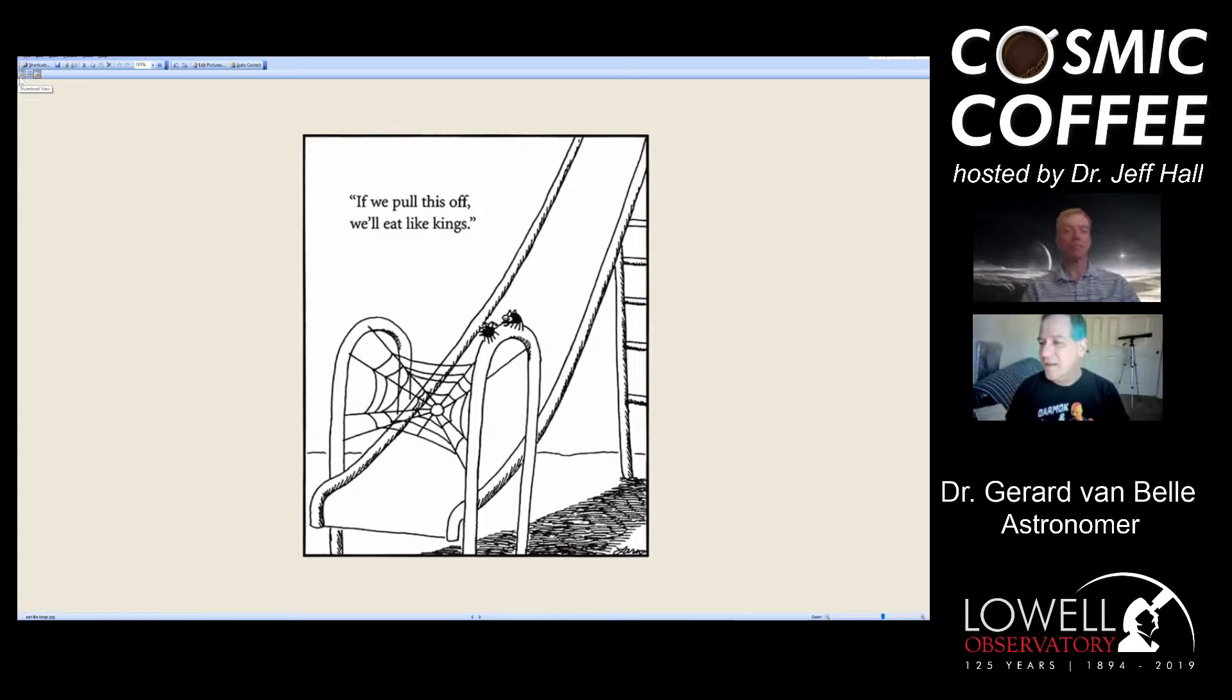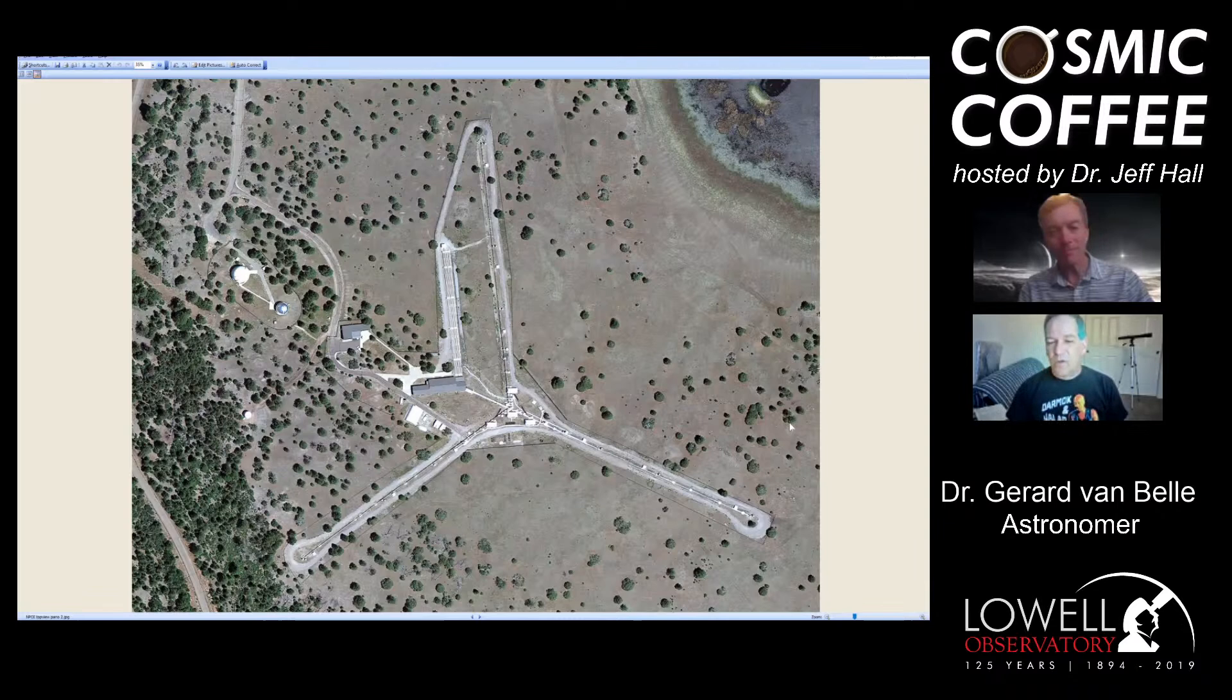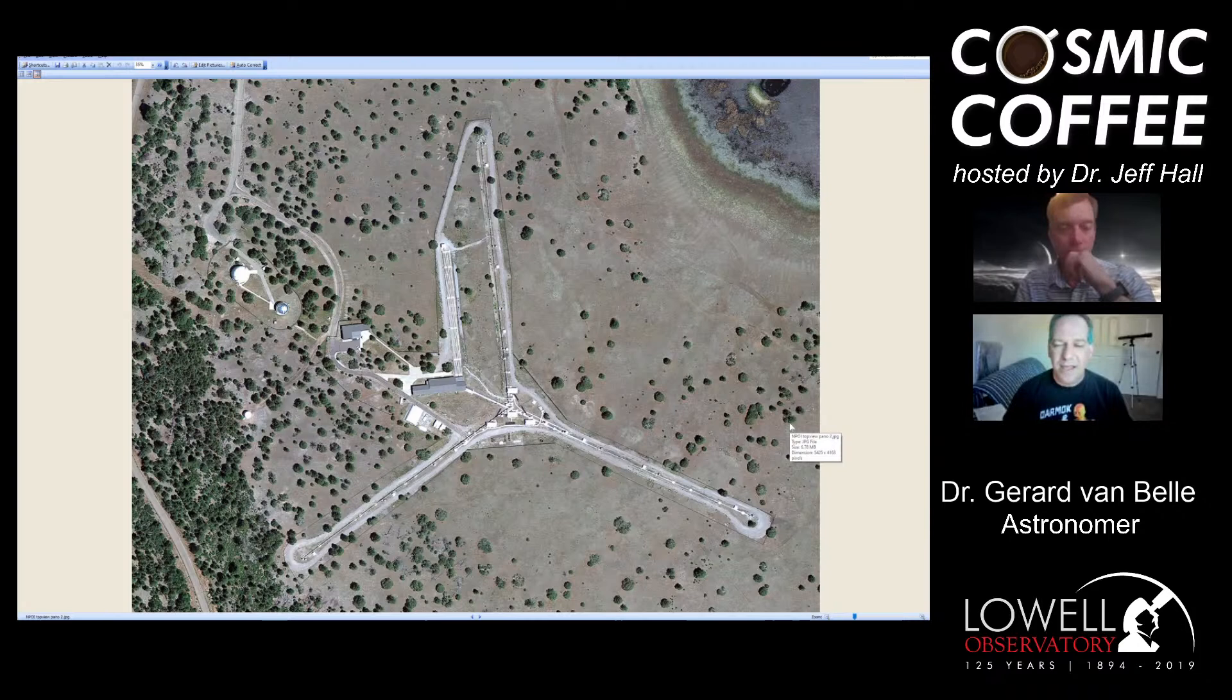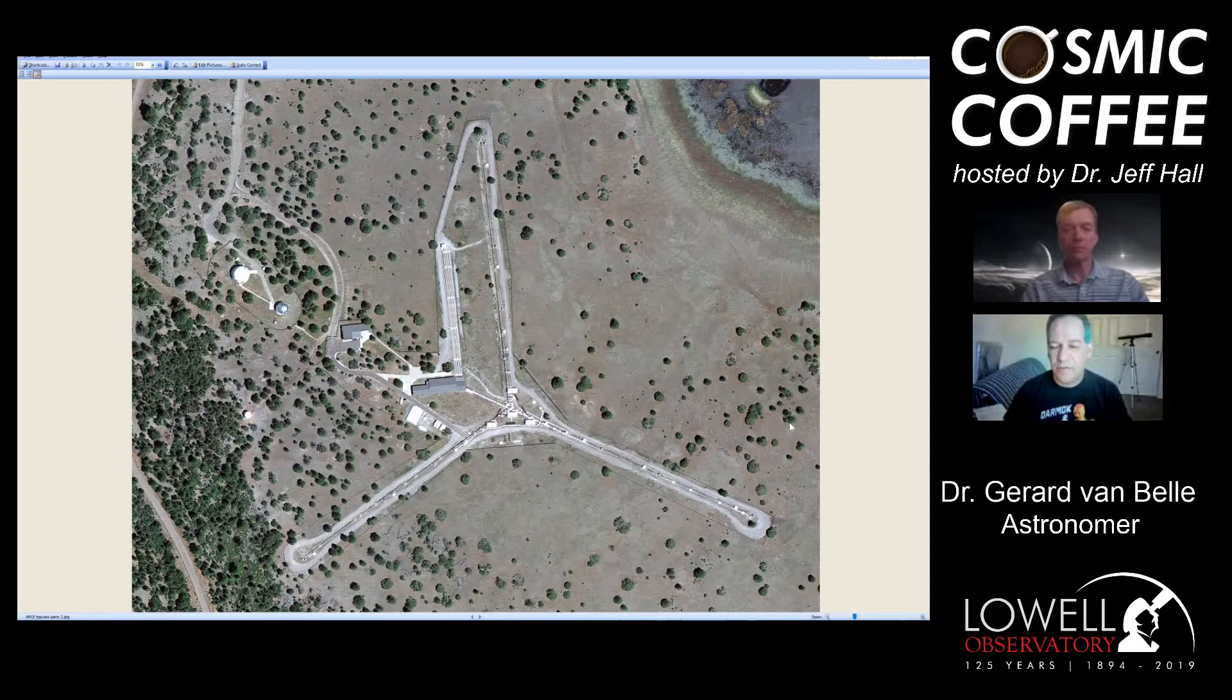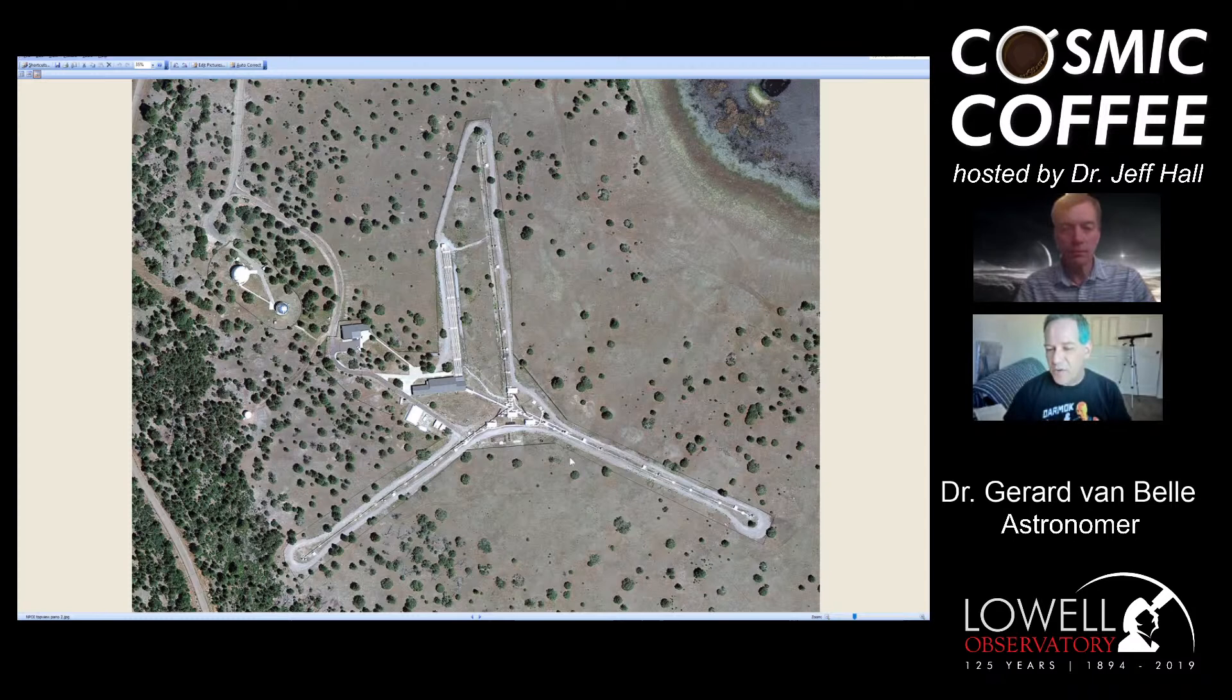Here at Lowell, we've been operating the NPOI array. This is the Navy Precision Optical Interferometer. Lowell Observatory is a partner with the Naval Research Lab and the US Naval Observatory in operating this. And what you have is three arms. This thing is so big, you can see it easily from Google Maps.